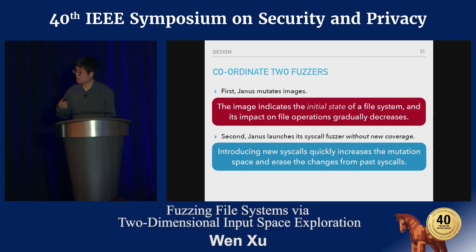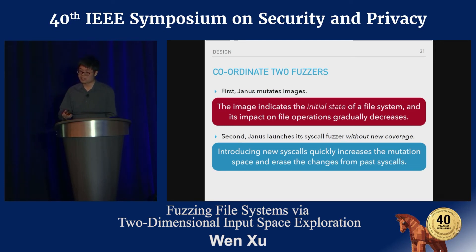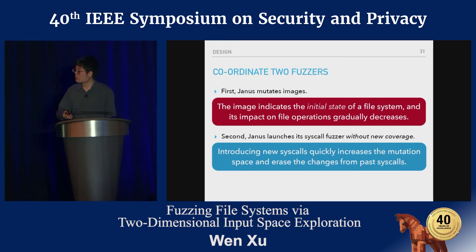Janus successfully cooperates the two fuzzers. We always invoke the image mutator first, because the disk image represents the initial status of a file system — as more file operations are invoked over time, its impact becomes less. So we always mutate the image first and do not mutate the program. If there is no progress, we then try to generate a new program by appending new syscalls or mutating existing system calls.